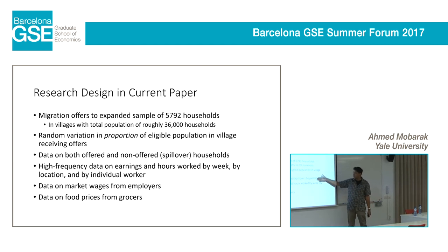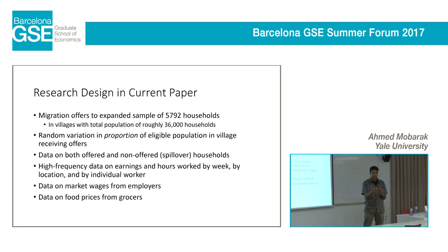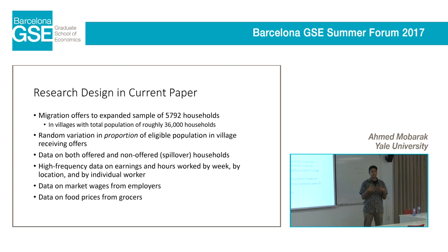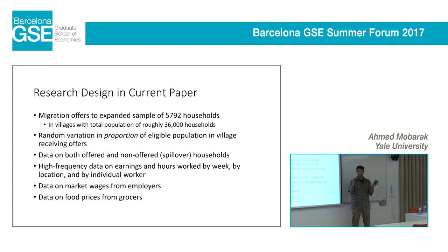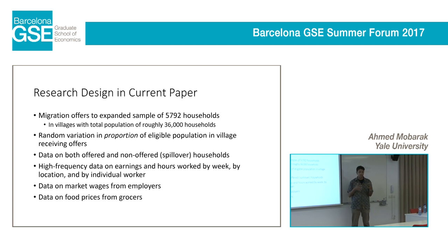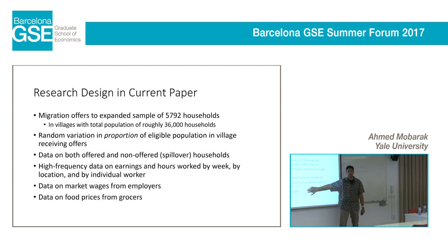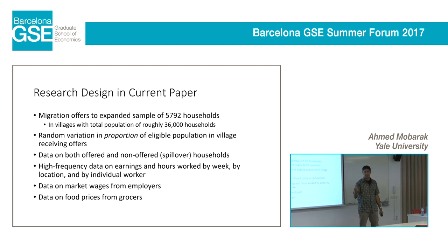A lot of these spillovers might be in the labor market, and this is a population where it's very difficult to collect income information because people do a variety of things — some agriculture, some non-agriculture, sometimes family labor. To get around that, we'll collect high-frequency data: in an eight-week period where they typically migrate, we'll visit households six times to ask every member what they do over the last eight days — how many hours did they work, where did they work, how much did they earn. We'll also collect data from employers to study wages — what's happening to profits of cultivators, the wages they pay, and how they're doing their business.